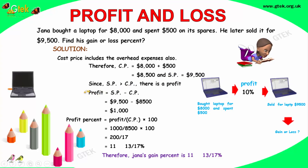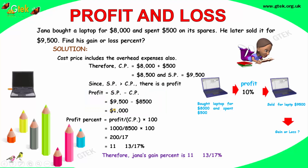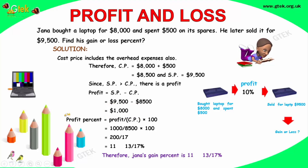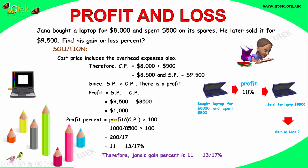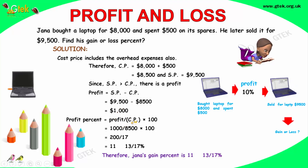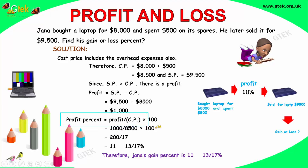So the profit is selling price minus cost price, so it's $1000. If we talk about the profit percentage, profit is $1000 divided by the cost price into 100. So profit percentage equals profit divided by cost price into 100.